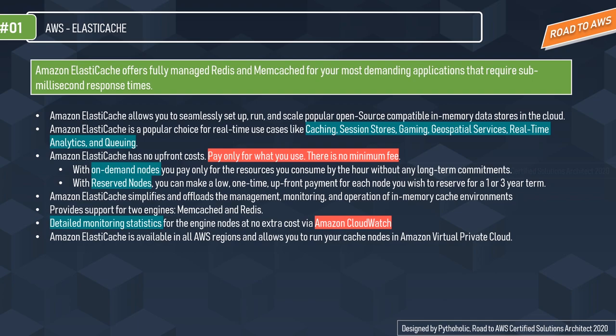Amazon ElastiCache has no upfront costs — you pay only for what you use with no minimum fee. With on-demand nodes you pay only for the resources you consume by the hour without any long-term commitments. With reserved nodes you can make a low one-time upfront payment for each node you reserve for a one or three-year term. As it's AWS managed, it offloads the management, monitoring, and operation of in-memory cache environments.